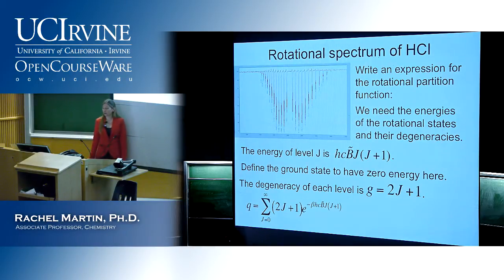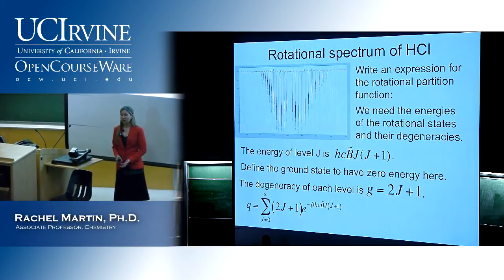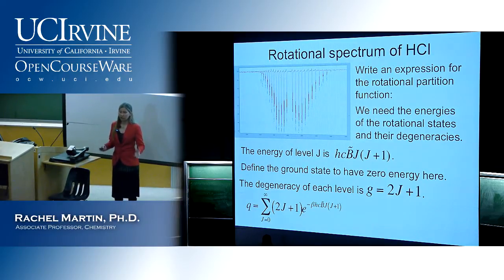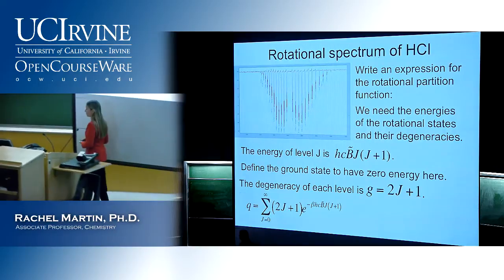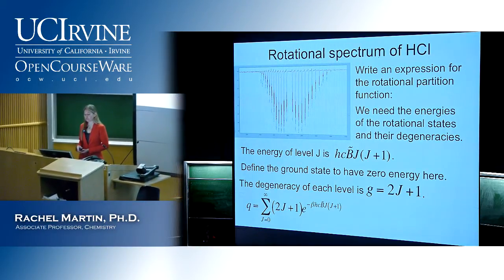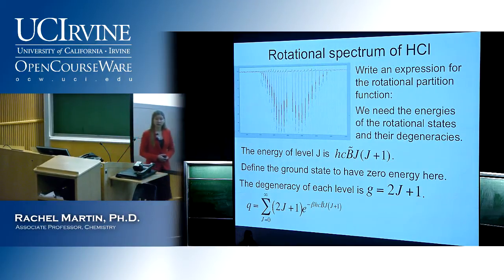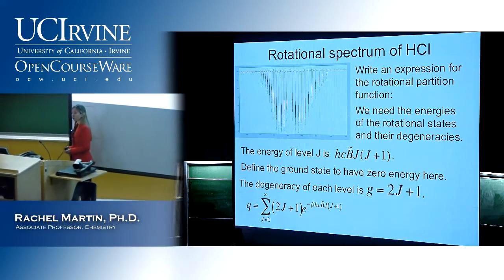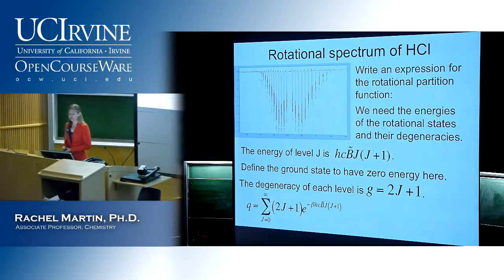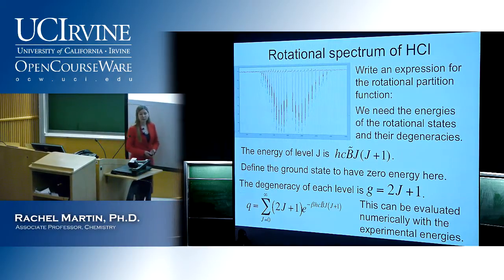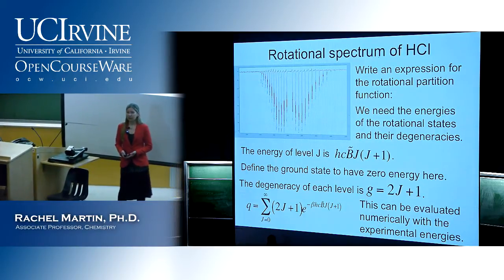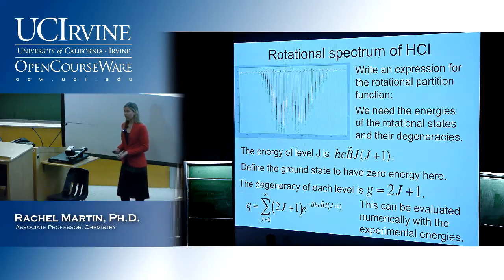Here's the expression for the partition function. There's not really an upper limit on the number of rotational states — you can just put more and more energy into the system and the molecule will rotate faster and faster. So we have to sum over all these levels from zero to infinity, plugging in the expressions for the degeneracy and energies. That can be evaluated numerically pretty straightforwardly using the experimental energies — you can count the peaks in the spectrum and plug in all the energies to calculate a value.